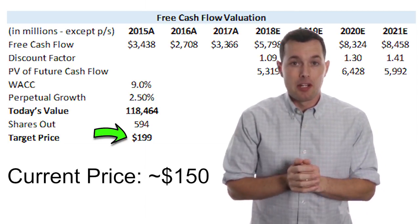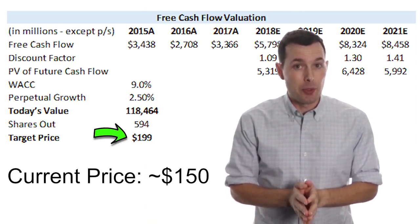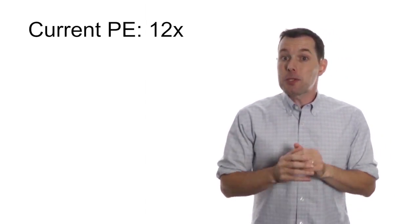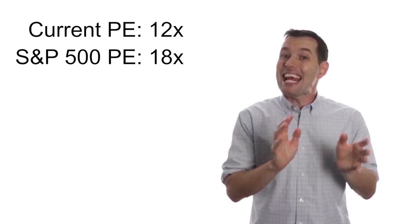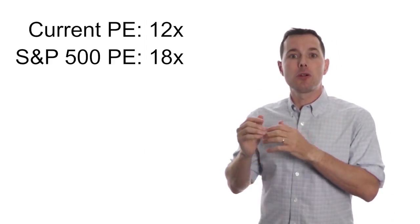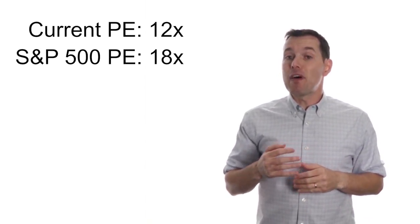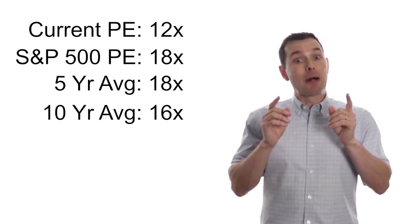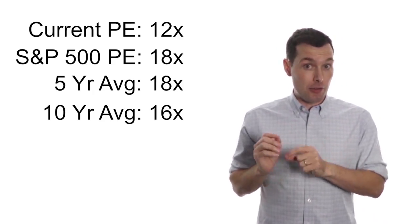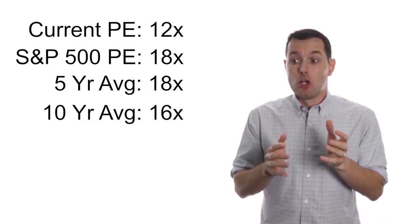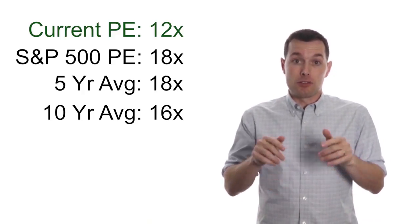Okay, but what about some other valuation methods? Discounted cash flow isn't the only way to do it. If we look at P.E. multiples, Caterpillar stock is currently trading at a forward P.E. of about 12 times next year's earnings. To put that in perspective, the S&P 500 is currently trading at about 18 times next year's earnings. In fact, if we look at Caterpillar's own historical P.E. multiple, we'll see that their five-year average is about 18 times next year's earnings and their 10-year average is about 16 times next year's earnings. So by most measures, according to the P.E. multiple, Caterpillar looks like it's fairly undervalued at $150 right now.